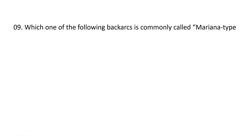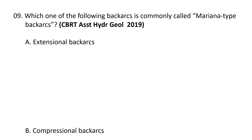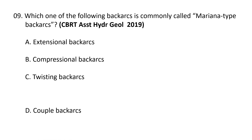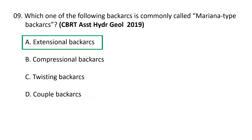Next question: which one of the following back arcs is commonly called Mariana-type back arcs? a) extensional back arcs, b) compressional back arcs, c) twisting back arcs, d) coupled back arcs. The correct option is a) extensional back arcs. When an overriding plate moves away from the trench, extension results and a back-arc basin forms. This extensional deformation is associated with a steeply dipping slab, and extreme examples can be found in Chile and at the Marianas.